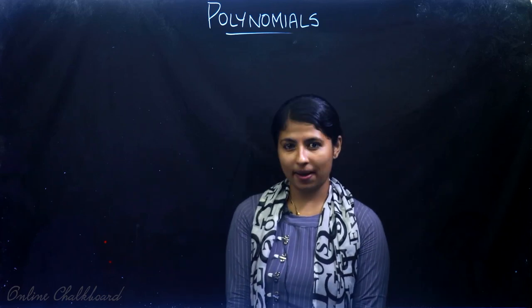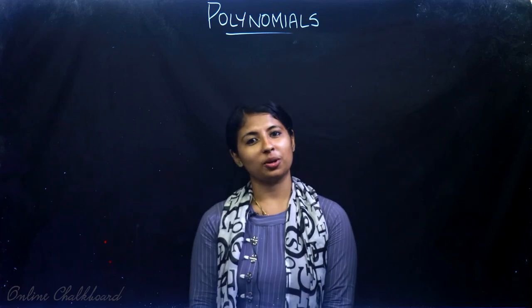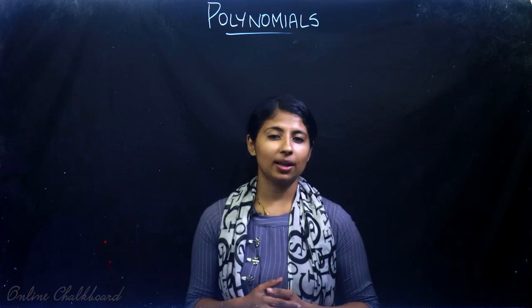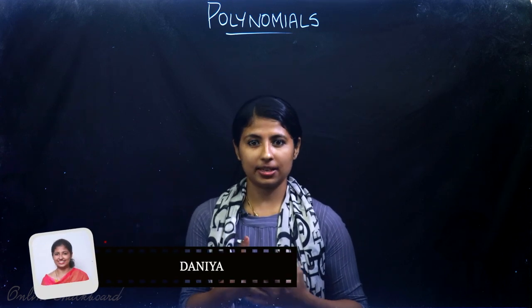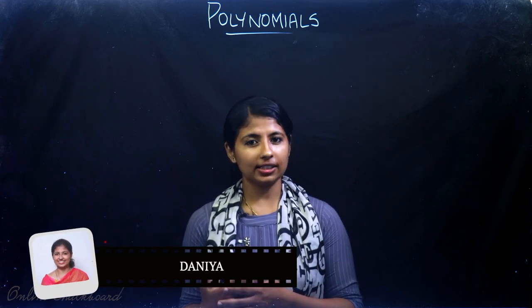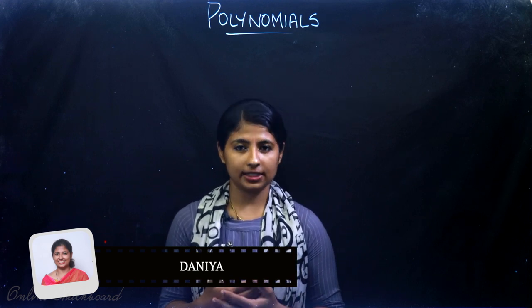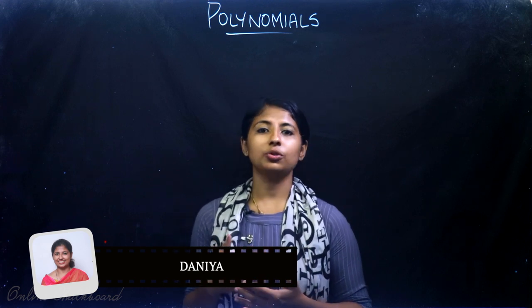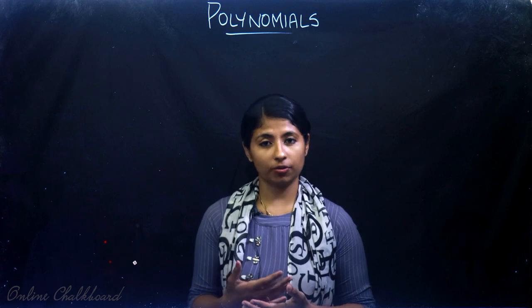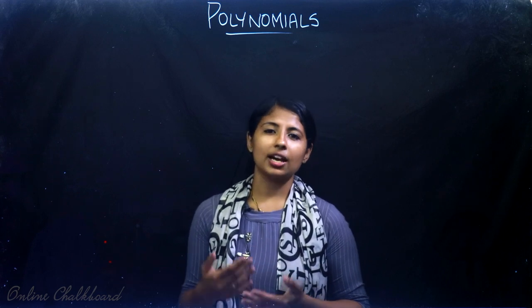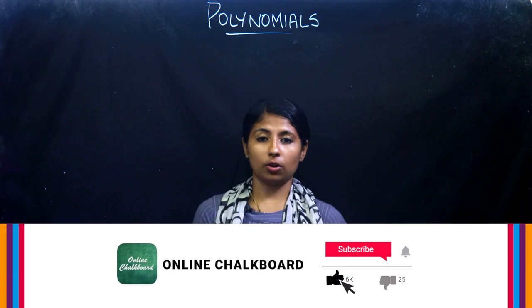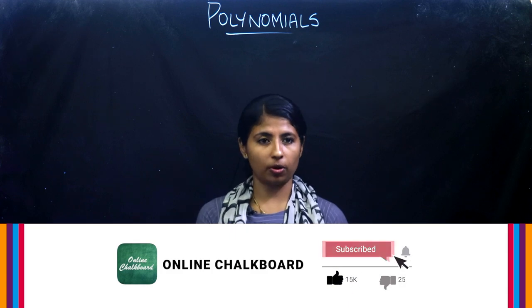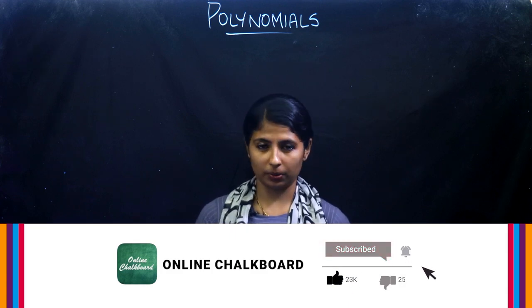Hello friends, welcome back to Online Chalkboard. We are dealing here with Chapter 2 Polynomials of Class 10 CBSE. So far we have seen how to represent zeros of a polynomial graphically, and today we will be learning what is the relation between the coefficient of a polynomial and the zeros of the polynomial.